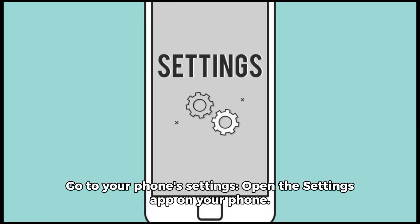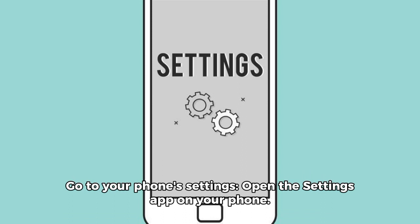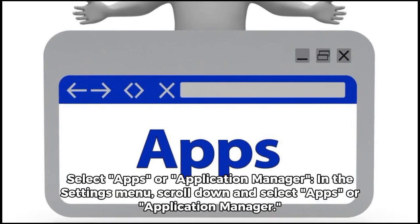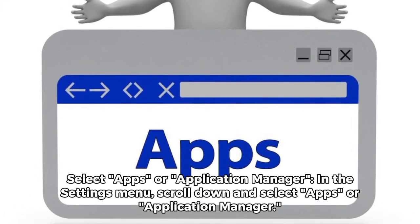Go to your phone Settings — open the Settings app on your phone. Then scroll down and select Apps or Application Manager in the Settings menu.